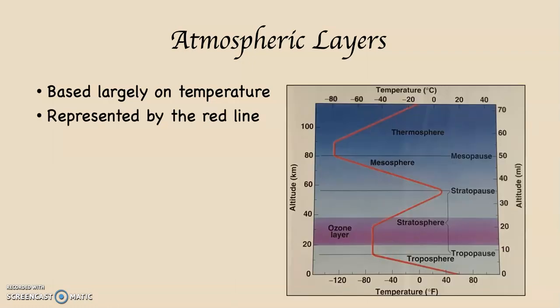Take a look at this diagram. The red squiggly line represents air temperature. At the bottom of the diagram, you can see temperature in Fahrenheit. As you go to the right, temperature is increasing. As you go to the left, temperature is decreasing. You can see zero degrees, 40 degrees, 80 degrees Fahrenheit, zero degrees, minus 40, minus 80, minus 120 degrees Fahrenheit.